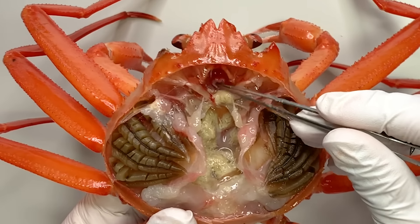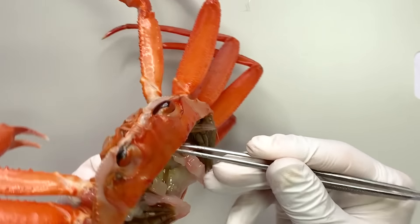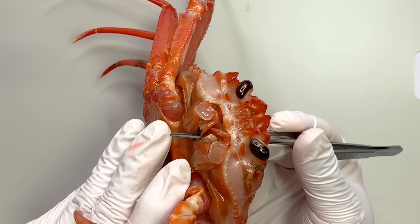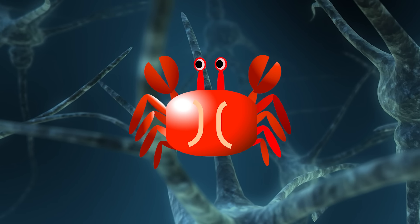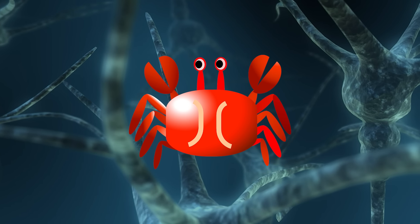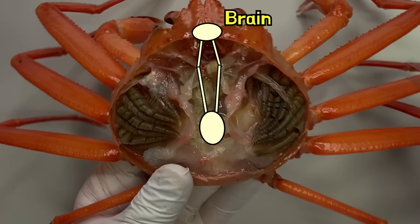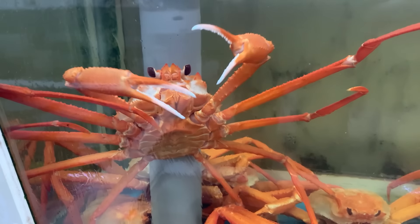After removing the stomach, you can see the esophageal opening. This opening confirms its connection to the mouth. Finally, the crab's nervous system is transparent and difficult to observe, but the brain is located above the esophagus. The nerves spread from the middle of the body to the legs, controlling the crab's movements.